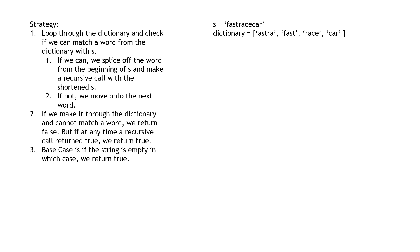Here's the overall outline of our algorithm. We want to iterate through the dictionary and check if we can match a word from the dictionary with the beginning of S. For example, we would try and compare a word to the first few letters of S. If they do not match up, we move on to the next word in the dictionary.